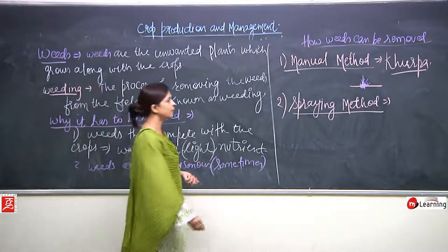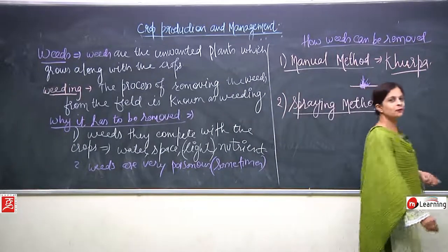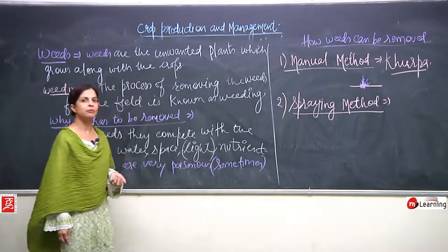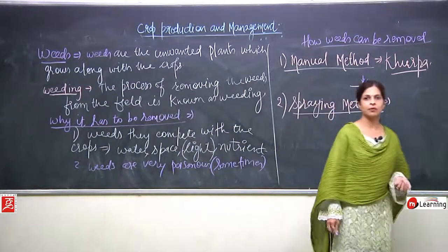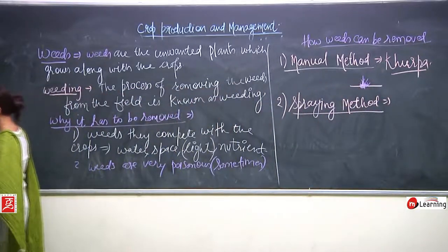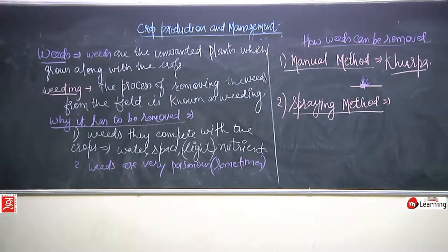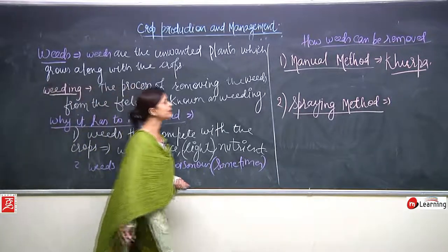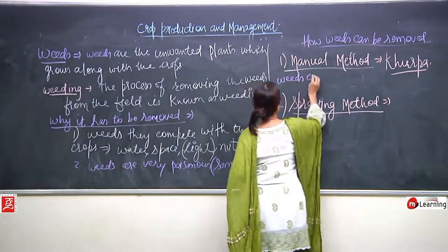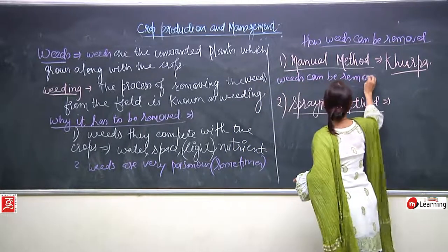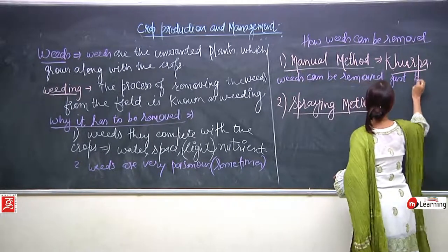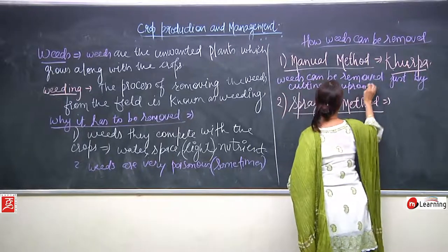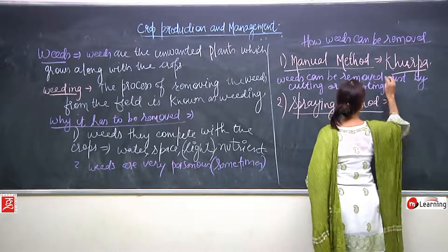This is the manual method of removing the weeds, done with the help of khurpa. Khurpa is a small instrument with which the weeds can be removed from the roots or just cut superficially. Weeds can be removed by cutting or uprooting with the help of khurpa.